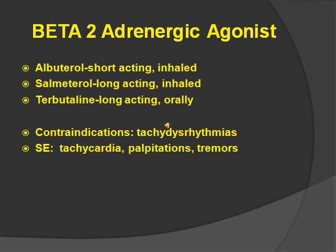Beta-2 agonists — just remember beta-2. As we said in the previous video, beta-1 is for the heart because we have one heart, and beta-2 is for the lungs because we have two lungs. They promote bronchodilation by activating the beta receptors in the bronchial smooth muscle. The three drugs to remember are albuterol, which is short-acting; salmeterol, which is long-acting; and terbutaline, which is long-acting. Terbutaline is the only one not inhaled because it doesn't end in '-ol' like the others. Short-acting is about 5 to 10 minutes; long-acting is about 10 hours. Contraindications include tachydysrhythmia. Side effects are tachycardia, palpitations, and tremors.